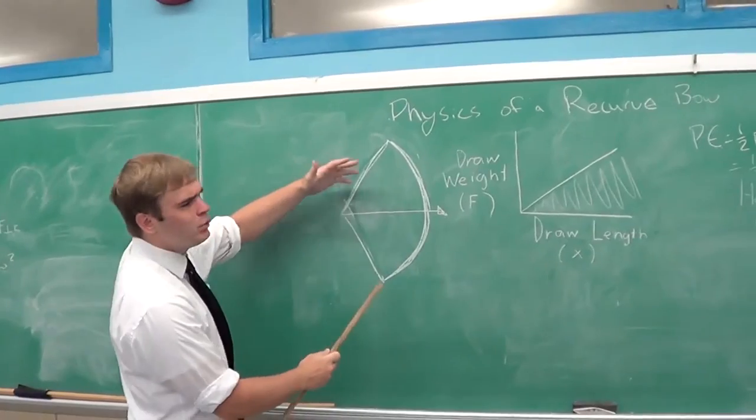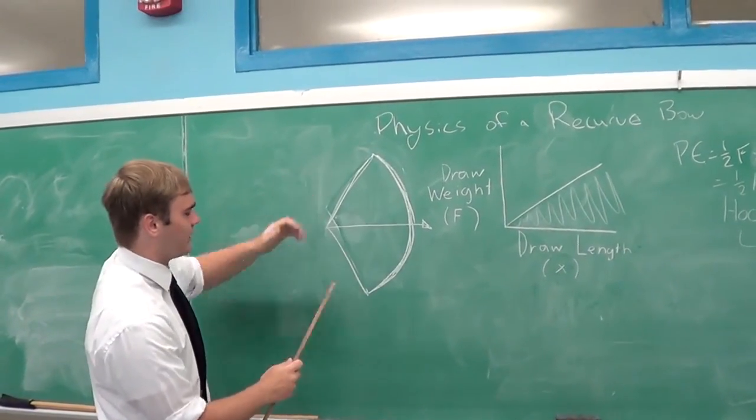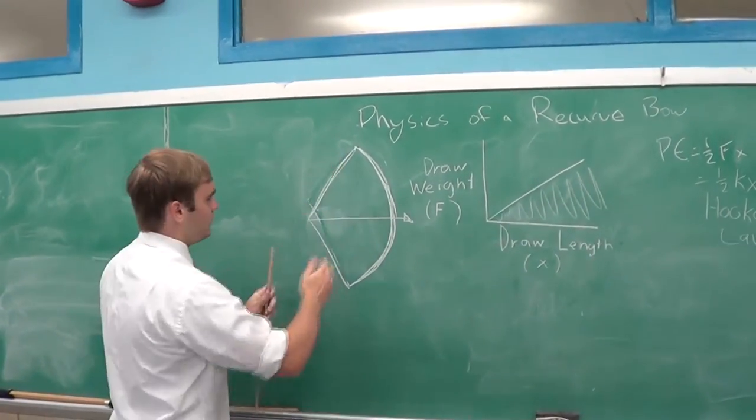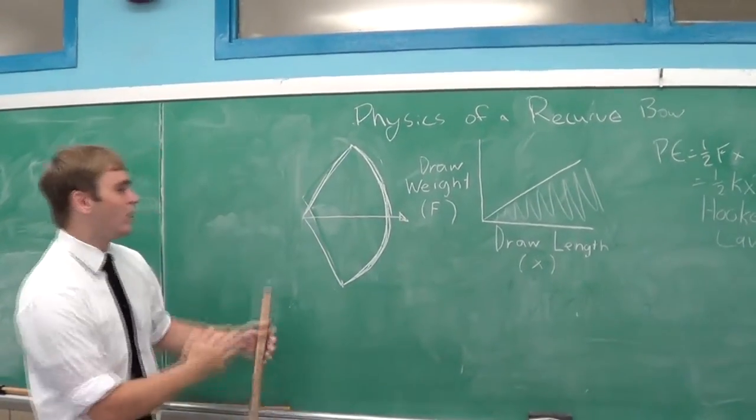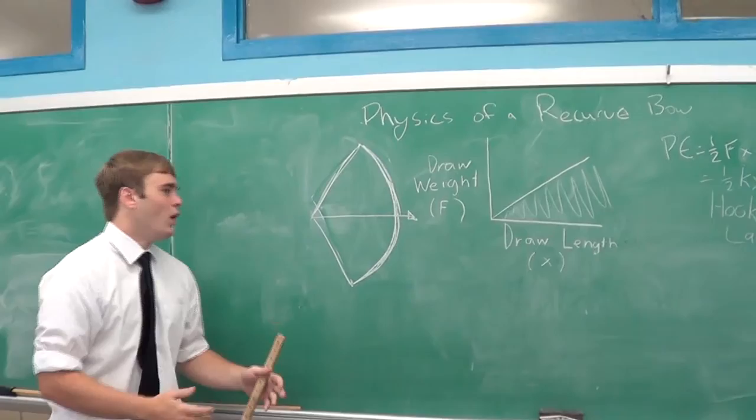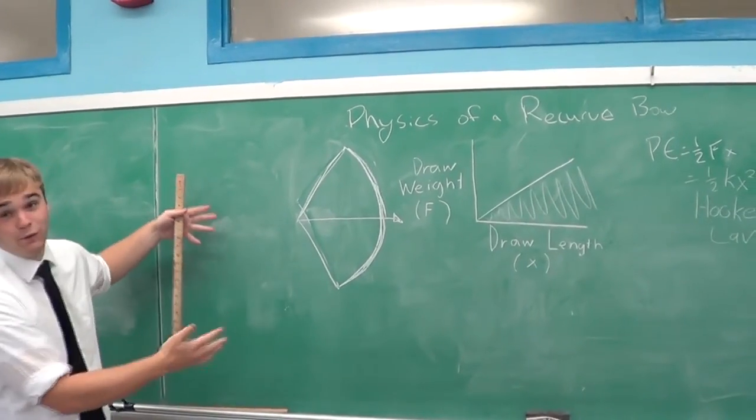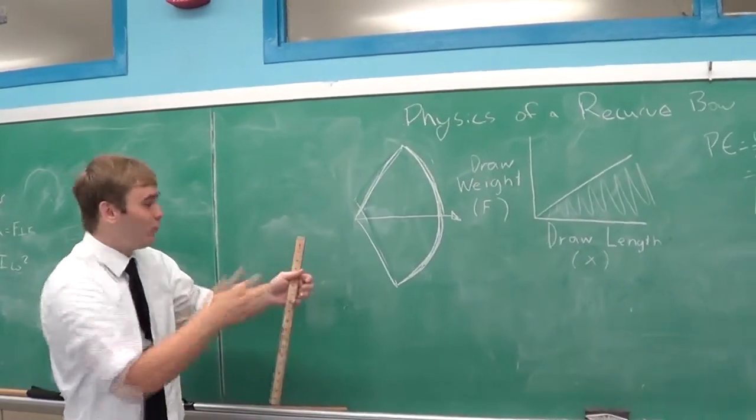So you see here, we've got a beautifully drawn recurve bow right here. Normally, you'd think the string would be sitting right here at rest. But right now, we have a beautiful bow where some imaginary outside force, maybe Mr. Sadler, has pulled the bow back.